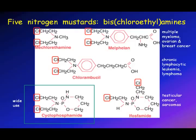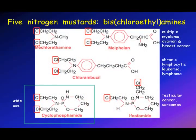A number of nitrogen mustard derivatives are still used today. Melphalan was developed because L-phenylalanine on the mustard was thought useful for melanomas, since L-phenylalanine is the precursor for melanin. It didn't work for melanomas but has been very useful in multiple myeloma, ovarian cancer, and breast cancer. Chlorambucil is a well-tolerated alkylating agent used in chronic lymphocytic leukemia and lymphoma. Ifosfamide is used in testicular cancer and sarcomas. Cyclophosphamide is a pro-drug that's well-tolerated, orally available, and used in various cancers as well as immunosuppressive therapy.